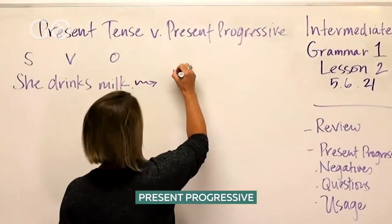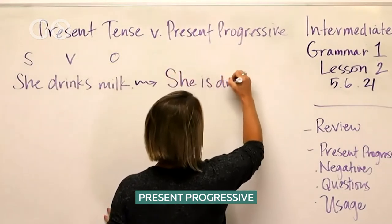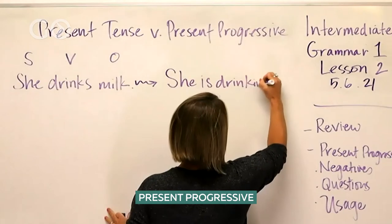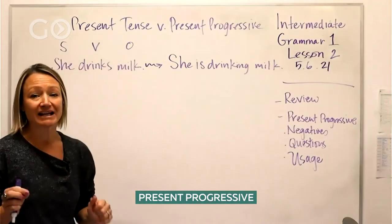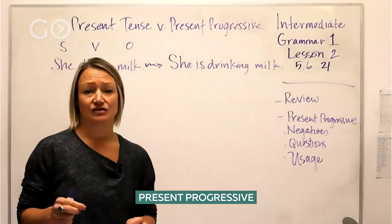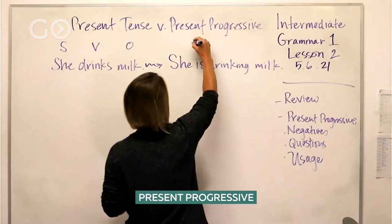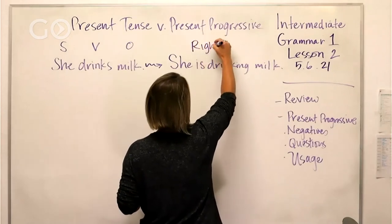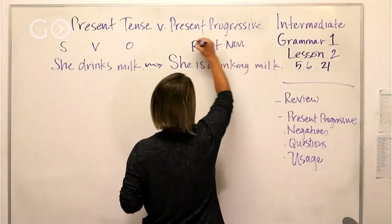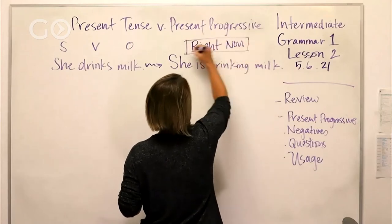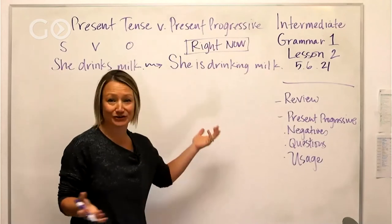If we say 'she is drinking milk,' the difference in meaning or usage between these two tenses is that the present progressive describes something that is happening right now. That's your key point — right now.